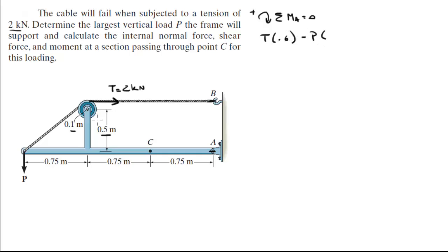Minus P times the distance from B to A which is 0.75 times 3 which is 2.25 and it is equal to 0. So T we have at 2 kN, we plug it in and we solve for P and we get that P is equal to 0.533 kN.